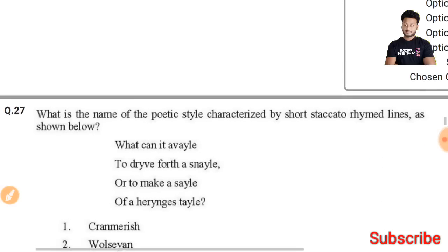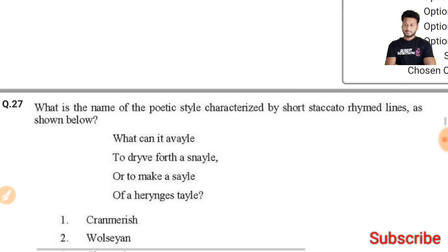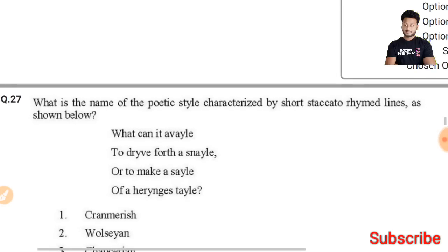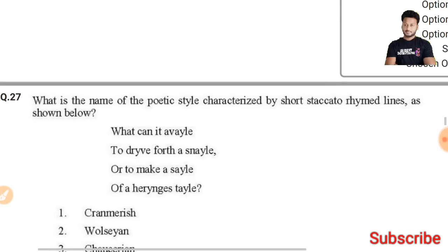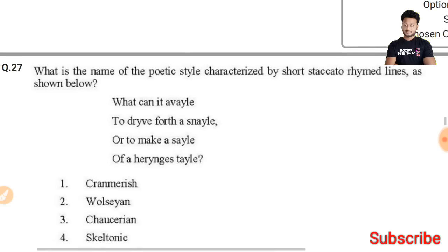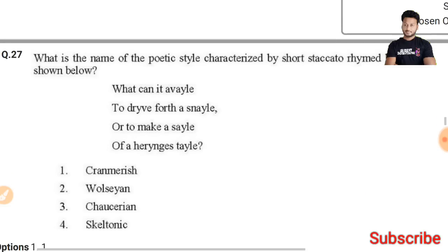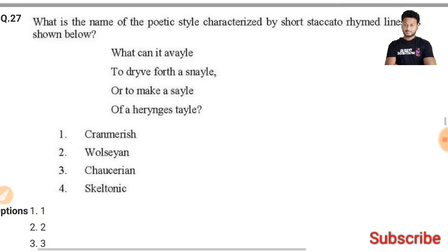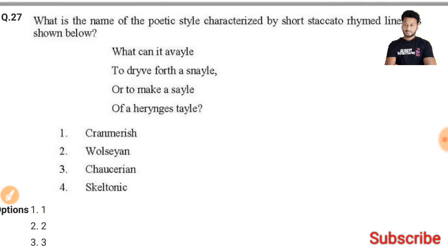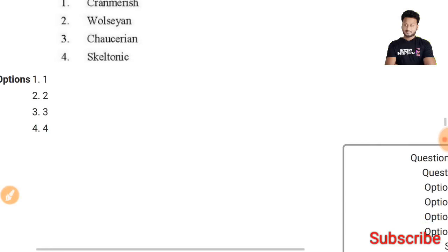Question 27: What is the name of the poetic style characterized by short, staccato rhyming lines? This poetic style is known as Skeltonics. The fourth option is the right answer.